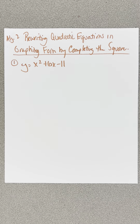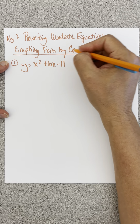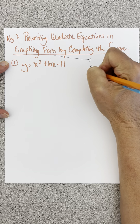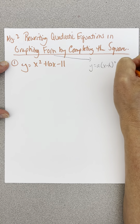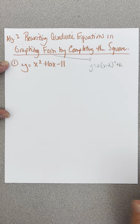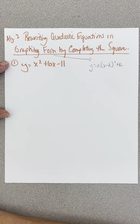Hi everybody, this is the Algebra 2 video on rewriting quadratic equations in graphing form by completing the square. Graphing form is in the form y equals a times the quantity x minus h squared plus k, because that is the form we use to find the vertex. All the equations today are in standard form, and we need to change them into graphing form.